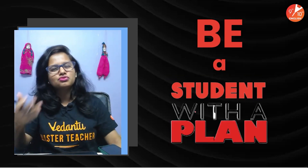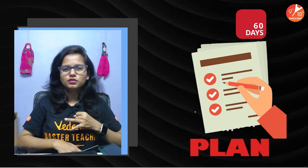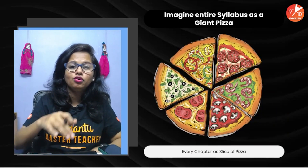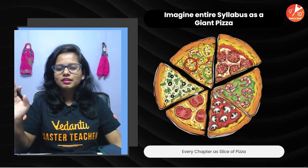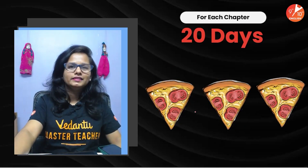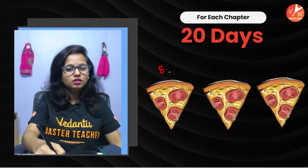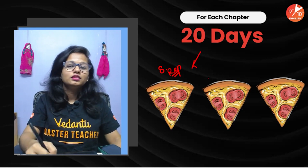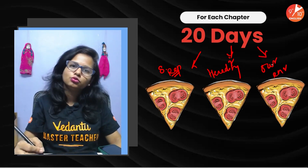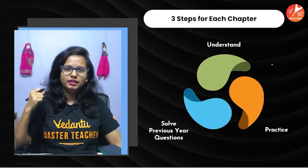Be a student with a plan. Consider January is gone; February, March remain and exams are in April — so you have a 60-day window. Think of your entire syllabus as a pizza with three slices. Devote 20 days to 'How Do Organisms Reproduce,' 20 days to Heredity, and 20 days to 'Our Environment' — that's your 60-day strategy.